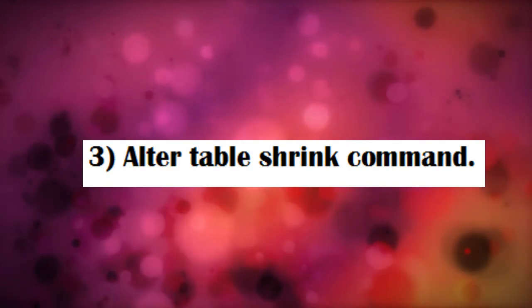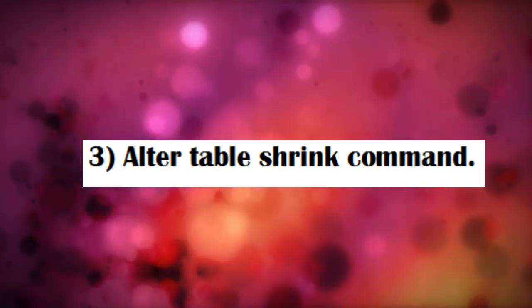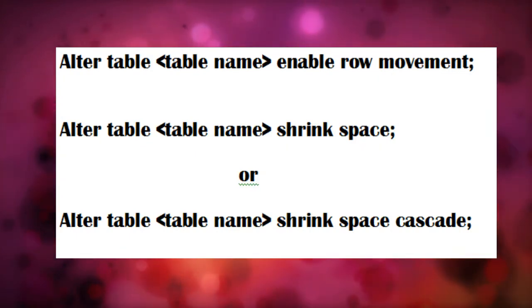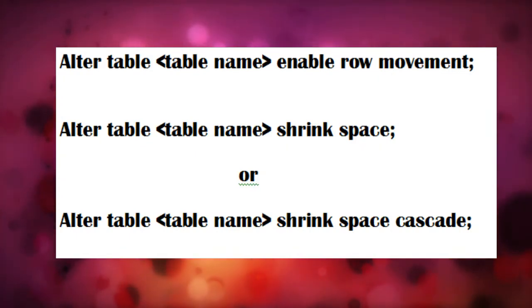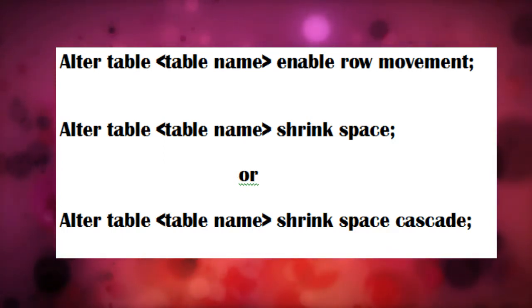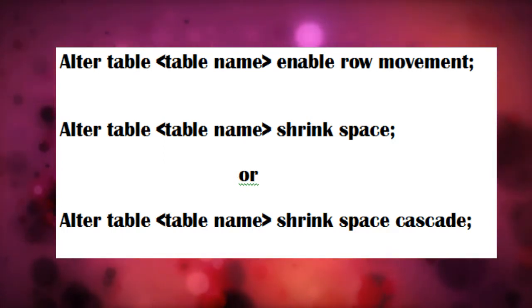And the last one, which I personally use, is the alter table shrink command. This was introduced in Oracle 10g. Before you run this command, you'll have to enable the row movement command for the table on which you want to run this command. You can use the alter table table name enable row movement command.